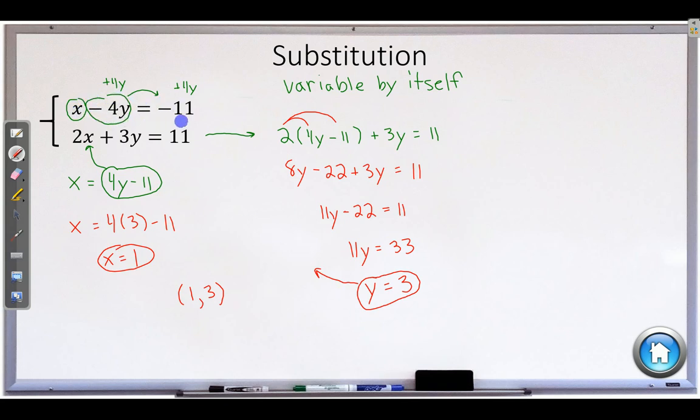That is the point where these two lines cross. This first equation is a line, and the second equation is a line. I don't know what they look like. So we didn't graph them. But we do know that they cross at the point 1, 3.